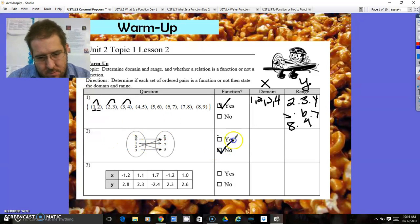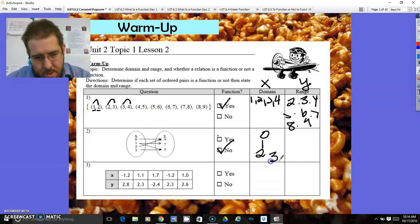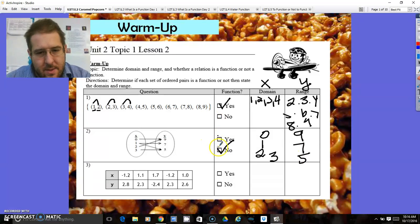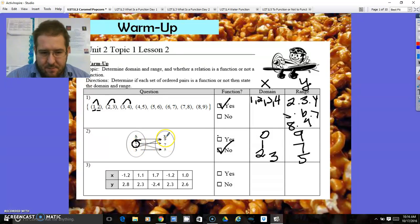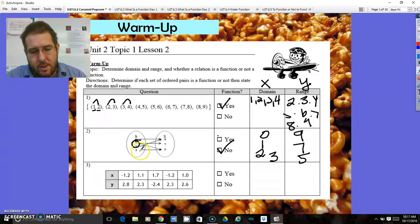This one is not a function. The domain is zero, one, two, and three. The range is nine, seven, and five. The reason why this is not a function is because of the number one. The number one is one of the domains, and it has more than one range. Each domain can only have one range.